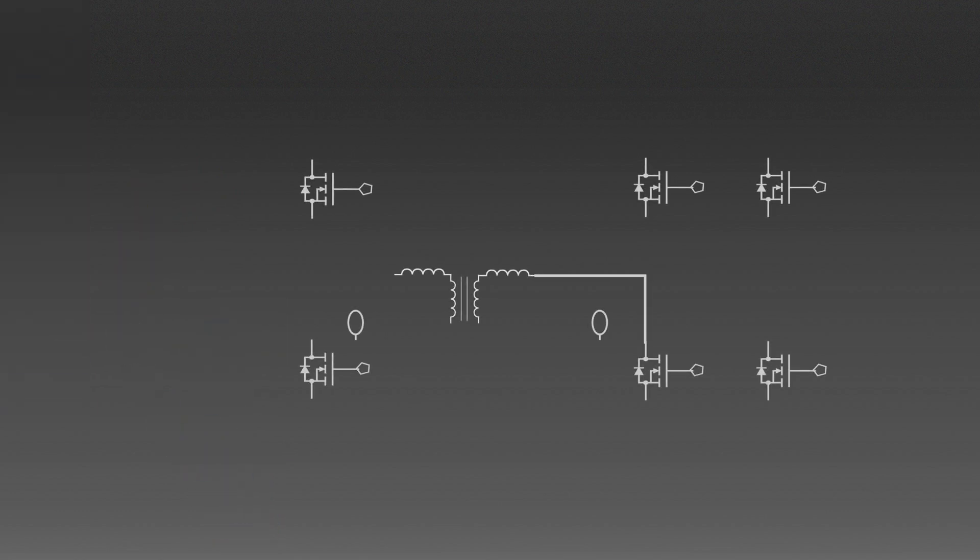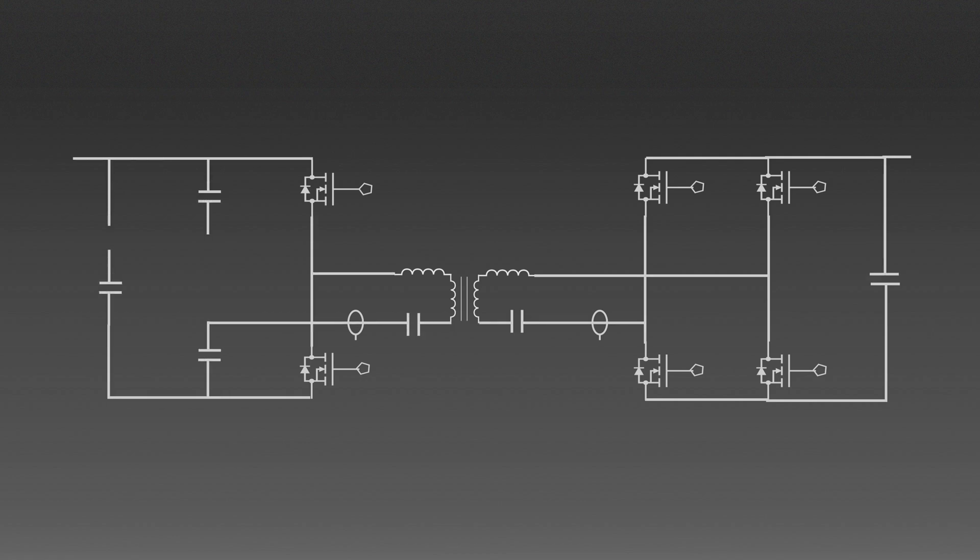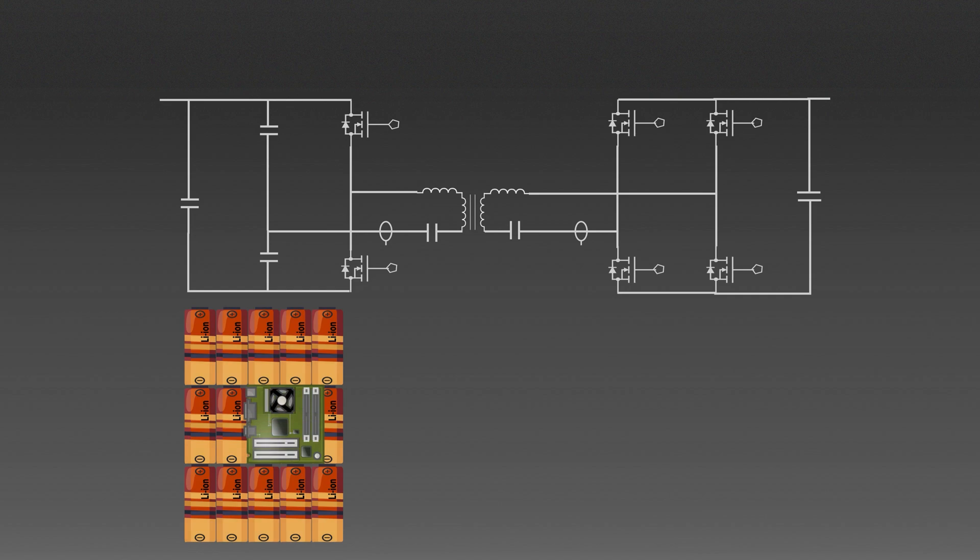Imagine you have a water pipe running from a reservoir. And you want to measure how much water is flowing through it. In electronics, measuring the flow of electric current is crucial for monitoring and controlling the circuit, just like measuring the water flow. Current sensing helps us understand how much current is flowing through a particular part of circuit. This is important for applications like battery management systems in electric vehicles, where we need to monitor the current to ensure safety and efficiency.